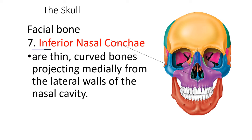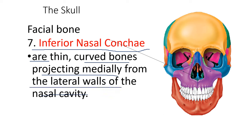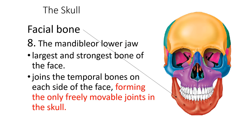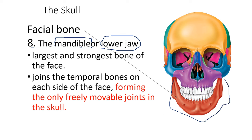Another bone is the inferior nasal concha — thin curved bones projecting medially from the lateral walls of the nasal cavity. Number eight is the mandible, or lower jaw. It is the largest and strongest bone of the face, joining the temporal bone on each side, forming the only freely movable joint in the skull.